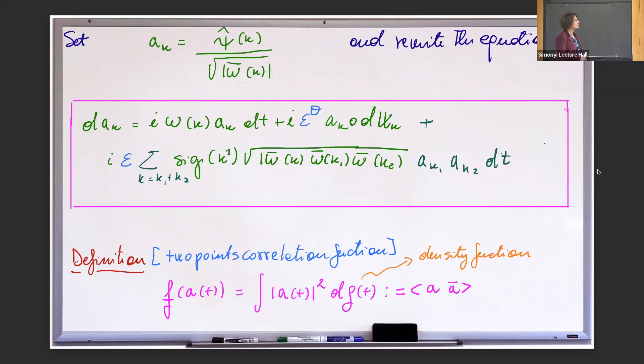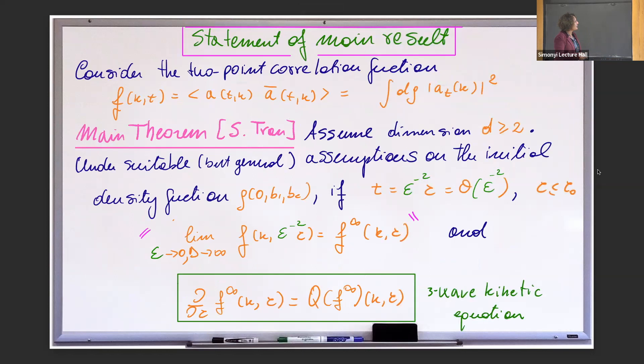What we are trying to understand is what we call the two-point correlation function, which is the expectation in terms of a particular density function rho of the Fourier coefficient squared. So this is nothing else than the Fourier coefficient. Now let me just state the theorem, and then we're going to start looking at the difficulties and what is used.